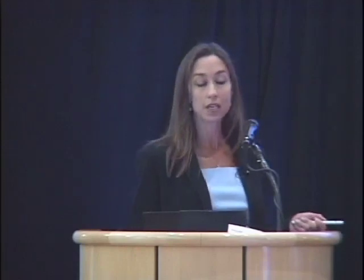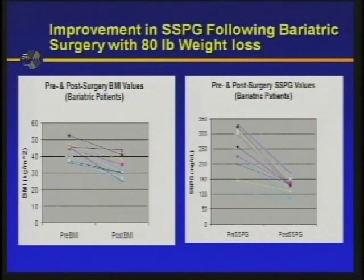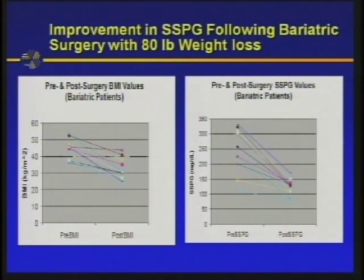We've capitalized on this observation by studying individuals who are similarly obese but very resistant or very sensitive, comparing their adipose tissue. More evidence suggesting that adipose tissue is related to insulin resistance is the fact that weight loss — decrease in body fat mass — can improve insulin sensitivity dramatically. This is most dramatic in the setting of bariatric surgery. These are patients of Dr. Morton's, and a year after surgery you can see the BMI decrease from around 54 to an average of around 30, with insulin resistance improving dramatically from an average of 230 down to about 130 after losing 80 pounds. Clearly they became more insulin sensitive.